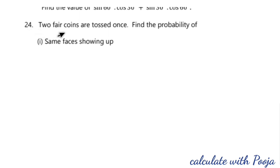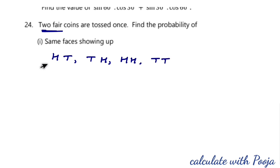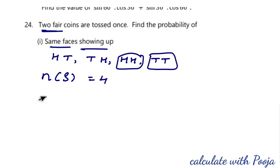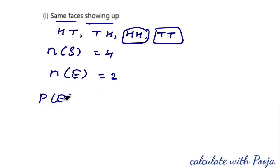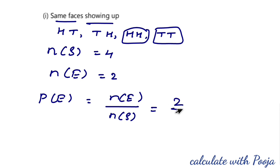Question 24: two fair coins are tossed once; find the probability of the same faces showing up. The sample space has 4 outcomes: HH, HT, TH, TT. Favorable outcomes (same faces) are HH and TT, so n(E) = 2. P(E) = n(E)/n(S) = 2/4 = 1/2. The answer is 1/2.